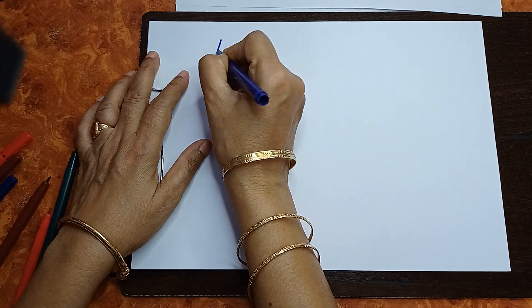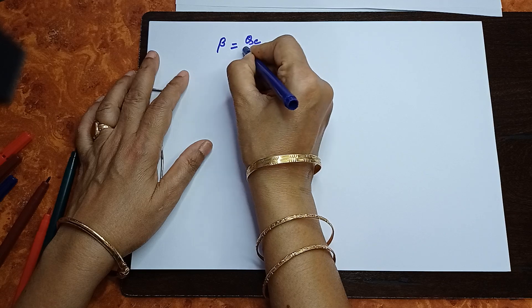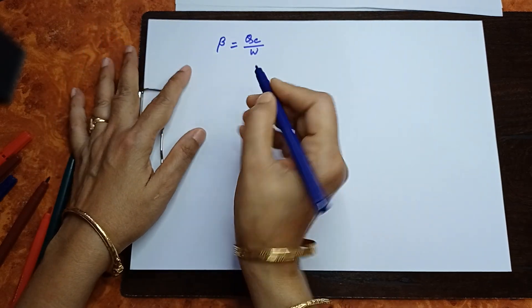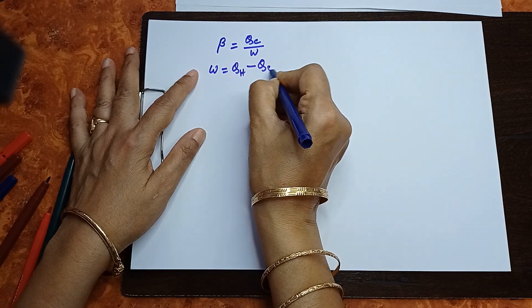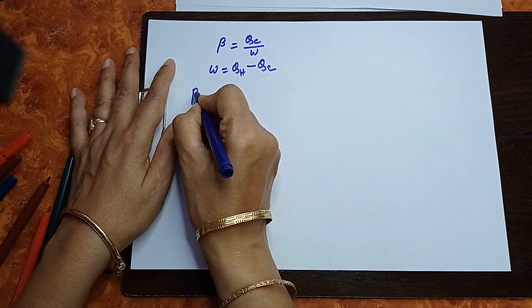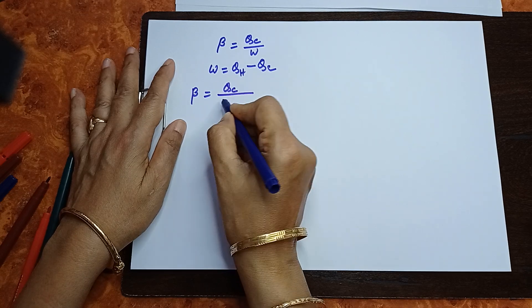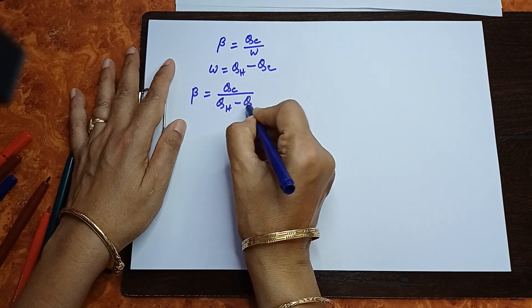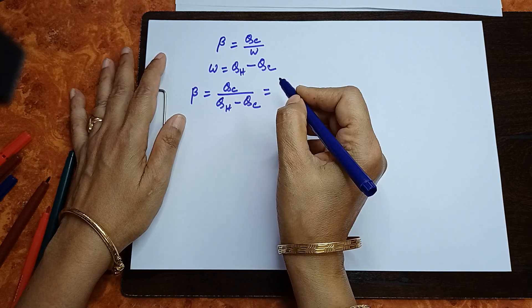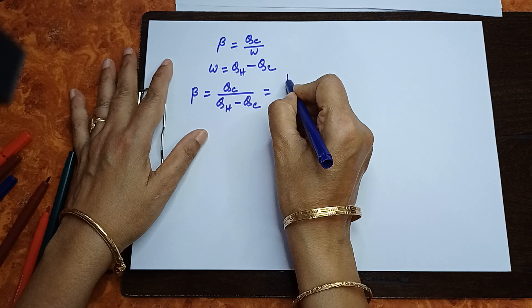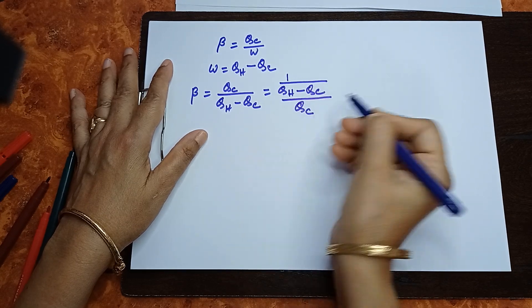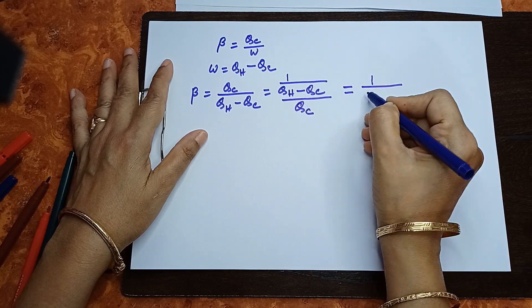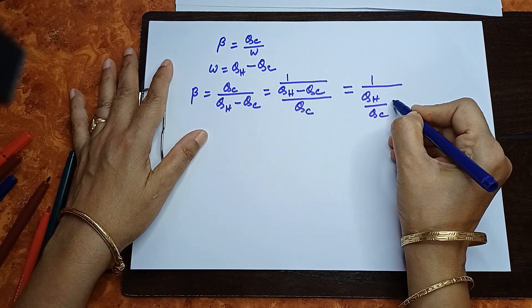The coefficient of performance beta equals QC divided by W. In the Carnot cycle, W equals QH minus QC, so beta equals QC divided by (QH minus QC). Dividing both numerator and denominator by QC gives: beta equals 1 divided by (QH/QC minus 1).